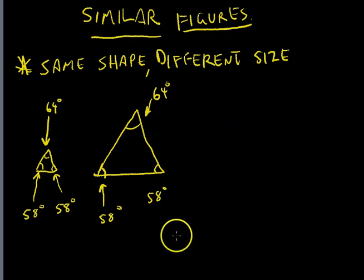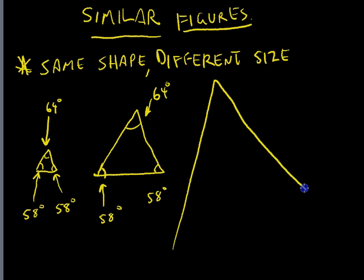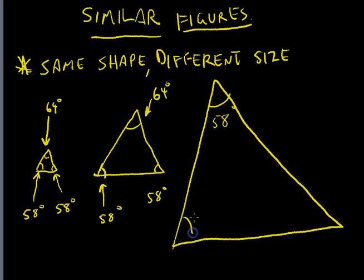I might just draw one more triangle. You can see this one's bigger again. Now I want to know, is this similar to these two triangles? Let's draw some angles in here, 58 degrees, 58 degrees, 64 degrees.